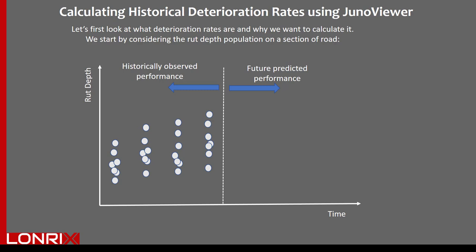With the deterioration rate calculation tool, I can choose a specified percentile value and then calculate the historical deterioration rate on those values. I can then use that deterioration rate in my model to predict the most likely future rut increments and rut depth values. I will use that historically observed rut rate only up to the point where a treatment is performed, and from that point on, my model should assume a new deterioration rate depending on which treatment had been performed.